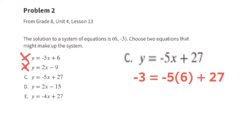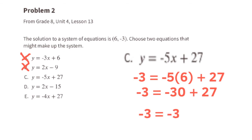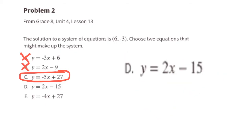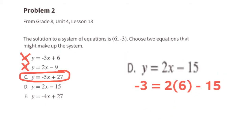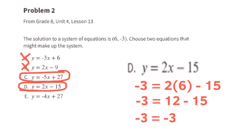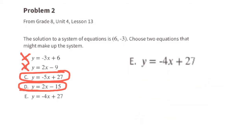Equation C: let's substitute x with 6 and y with negative 3. The equation reads negative 3 equals negative 30 plus 27, and negative 30 plus 27 equals negative 3. Negative 3 does equal negative 3, so C might make up the system. Even though the instructions said choose two equations that might make up the system, and we've already found two equations that make up the system.